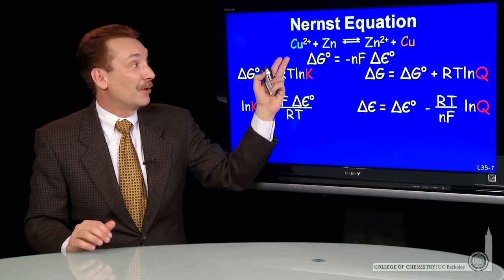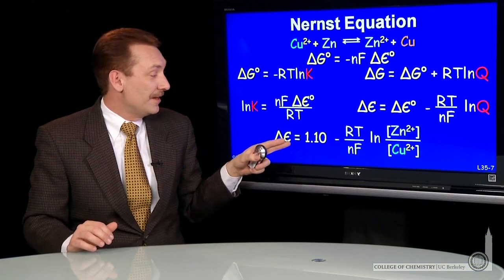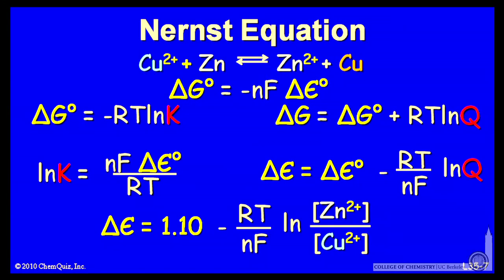So for this example, where we have copper ions, I could write that the potential is the standard cell potential plus a term that corrects for the non-standard conditions. So if I have concentrations other than one molar zinc and one molar copper, I can still calculate a potential.